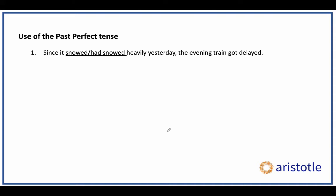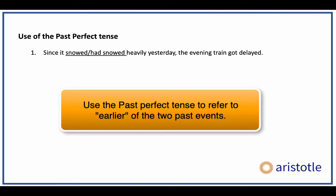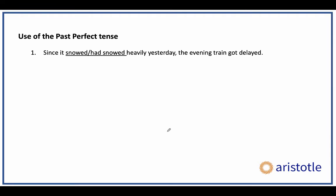The correct answer is 'had snored.' Some of you might have got it right, some wrong — but those who got it right sometimes do so because 'had' sounds better, not because they know the rule. So when do you use past perfect tense? The past perfect is used when a sentence talks about two events in the past that took place at different times. The earlier one takes the past perfect tense; the latter one takes the simple past. Think of past perfect as coming before the simple past.